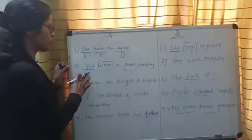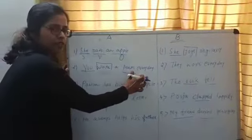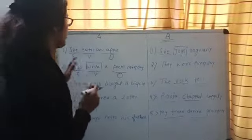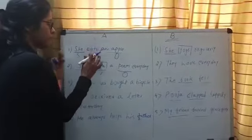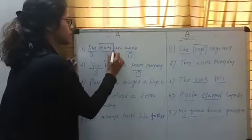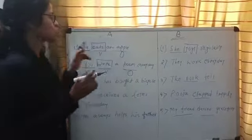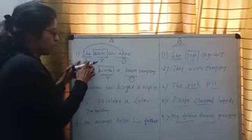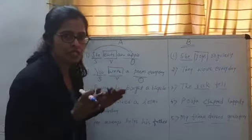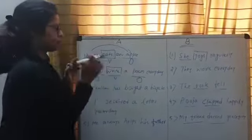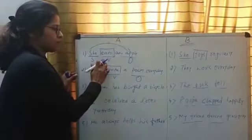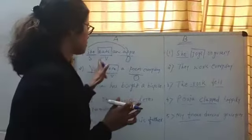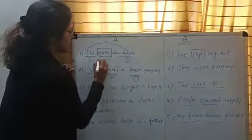Move to the second sentence: you write a poem every day. Here, 'you' is the subject, 'write' is the verb, and 'poem' is the object. Since 'eats' is a verb here, and it contains a direct object to receive the action performed by the subject — she is eating an apple — this verb has a direct object. So this verb is called a transitive verb.